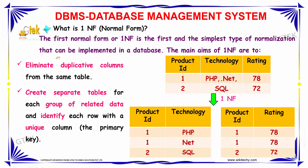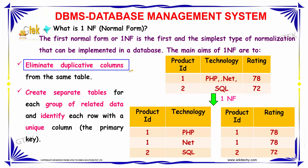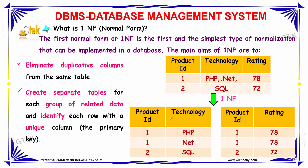The first constraint in first normal form is that you have to eliminate duplicative columns from the same table. Then we have to create separate tables for each group of related data and identify each row with a unique column.